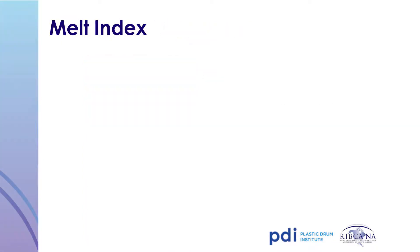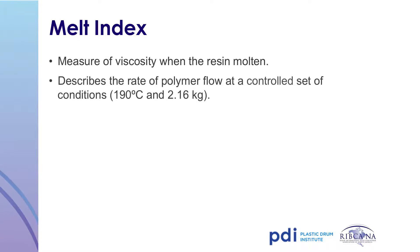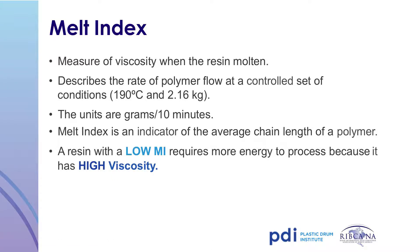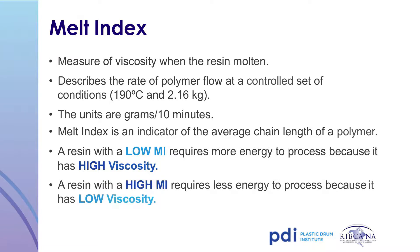Melt index is another key property of polyethylene resin. It is best described as a measure of the viscosity of the resin, or the rate at which a polymer will flow when melted under standard conditions. The result is recorded in grams of flow per 10 minutes. The standard test protocol is conducted at 190 degrees centigrade at 2.16 kilograms of weight. A resin with a low melt index requires more energy to process due to its high viscosity. A good comparison would be water versus syrup — the more a resin flows like water, the higher the melt index.